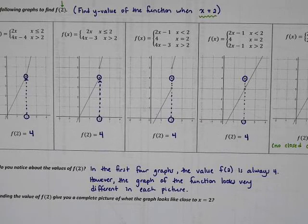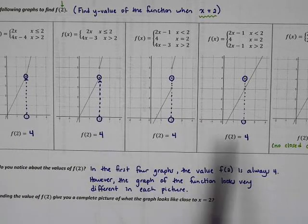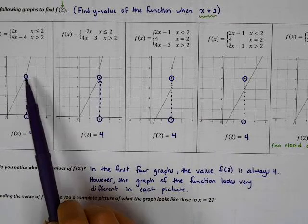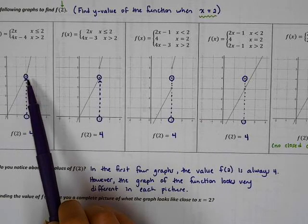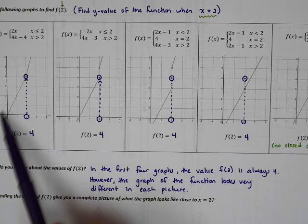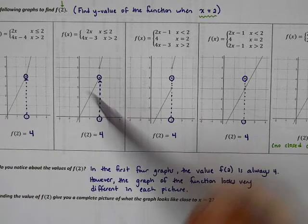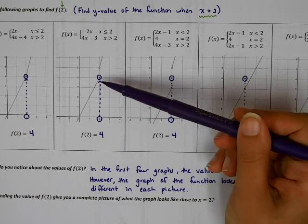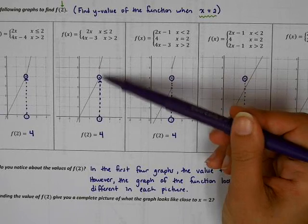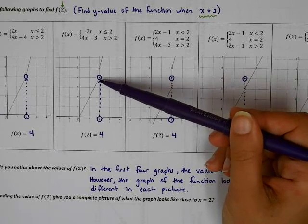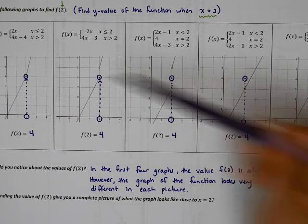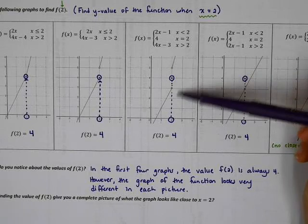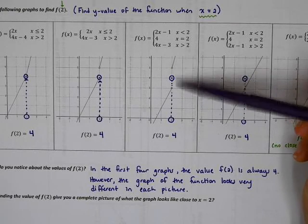So what I really want you to kind of get out of this is that this y value might be the same. But you'll notice that in this piecewise function, the two pieces connect nicely. In this piecewise function, the two pieces do not connect at all, and one of them has a closed circle. In this piecewise function, the two pieces do not connect at all. Neither of them has a closed circle, but there is this singular dot in the middle.